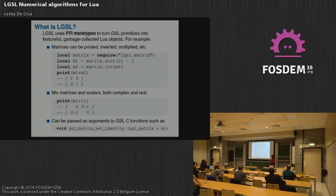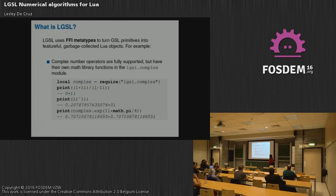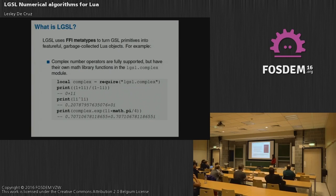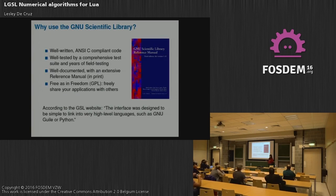Even though these are featureful Lua objects, you can still pass them directly to all the GSL C functions. A second example is the complex number type, which is already supported in LuaJIT, but the problem is there are no operators defined on them. LGSL provides these operations — division, taking the power of i to the i-th (which is a real number, surprisingly), and here's the complex variant of the exponent function.